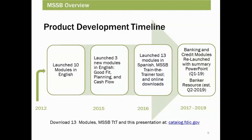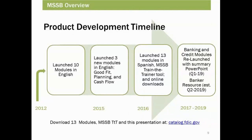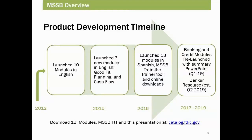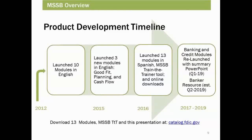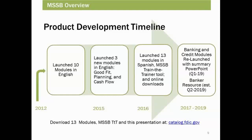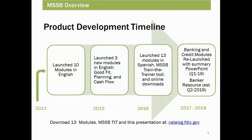I'm going to share a little bit about our product development, which is useful especially for those not familiar with the products. We first launched 10 modules in English and Spanish, where both the FDIC and the SBA worked together to identify topics that were the top requirements by entrepreneurs in understanding the journey to getting a loan. In 2015, we launched three additional modules in English — the Good Fit, Planning, and Cash Flow — which were responsive to feedback from our Alliance members. Later in 2016, we relaunched the modules now in Spanish and made them available more easily online. CDs are also available.